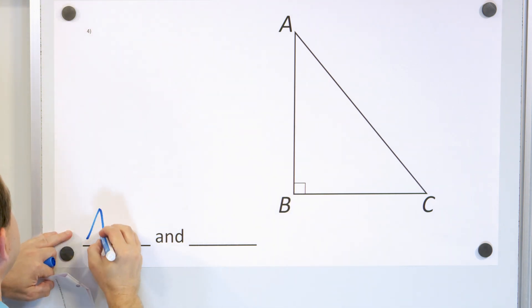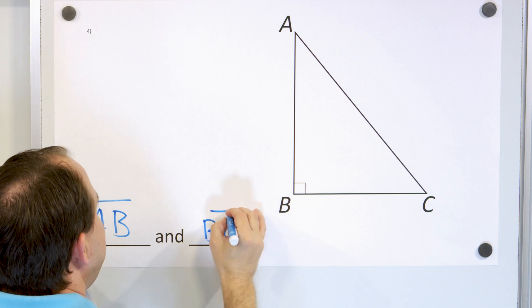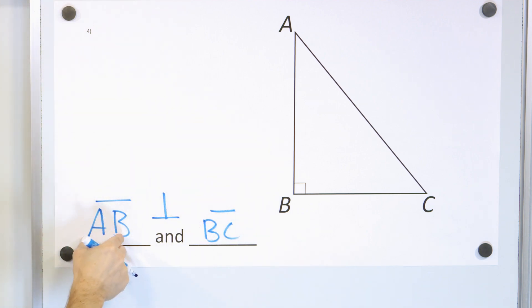But this segment is perpendicular with this segment because of the right angle right there. So we call it line segment AB is perpendicular to BC. And we can use this symbol perpendicular to show us that AB is perpendicular to BC. You don't have to do that if you're just listing them, but that's the way I'm teaching you what that symbol means.